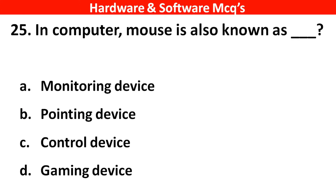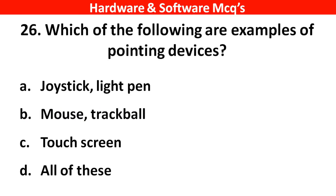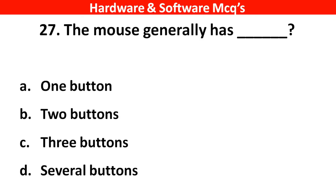Next question: In computers, a mouse is also known as ___. The right answer is option B — pointing device. Next question: Which of the following are examples of pointing devices? The right answer is option D — all of these. Next question: The mouse generally has ___. The right answer is option C — three buttons.